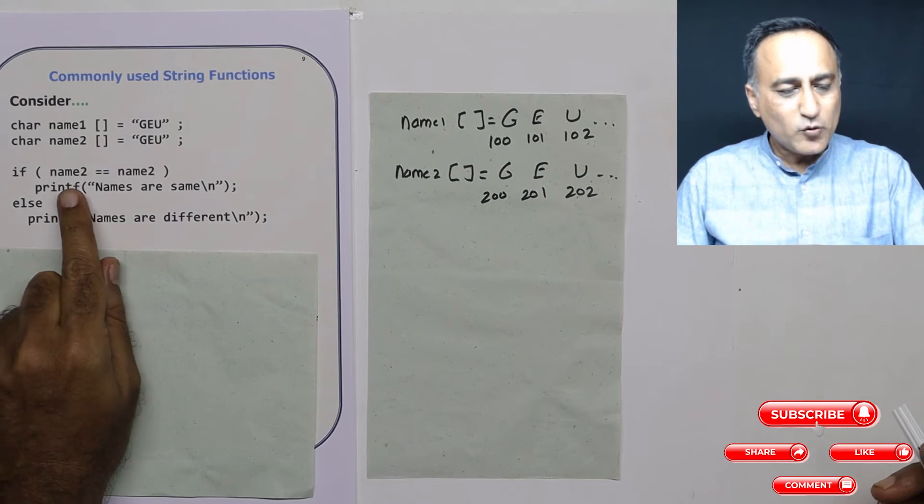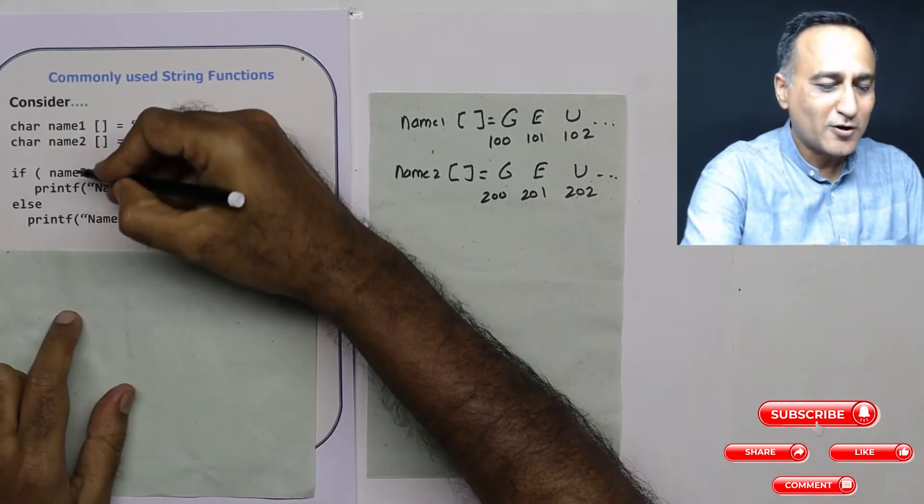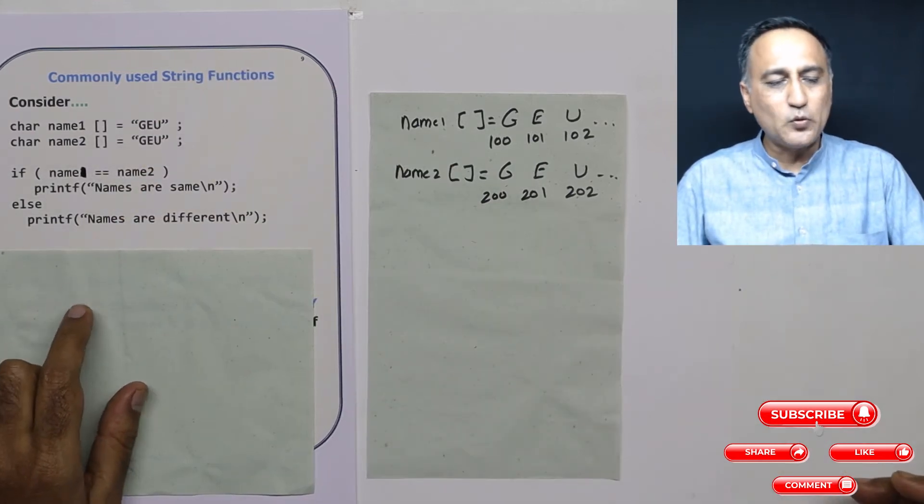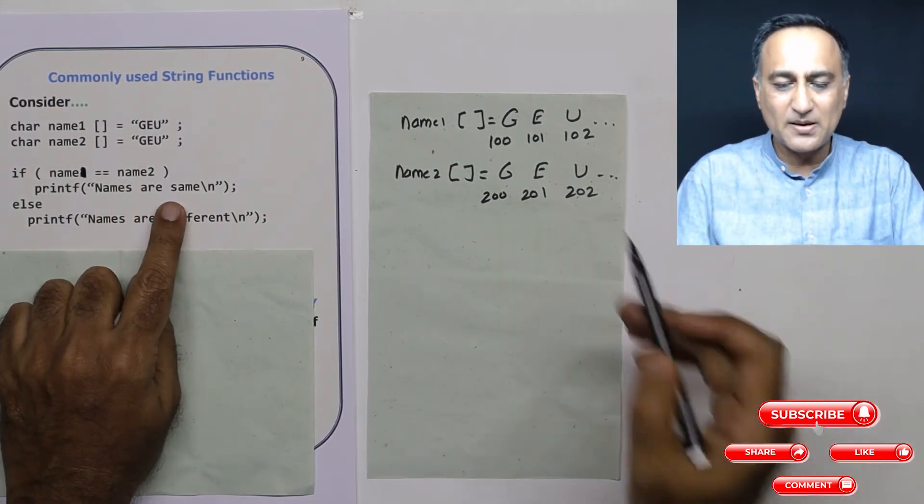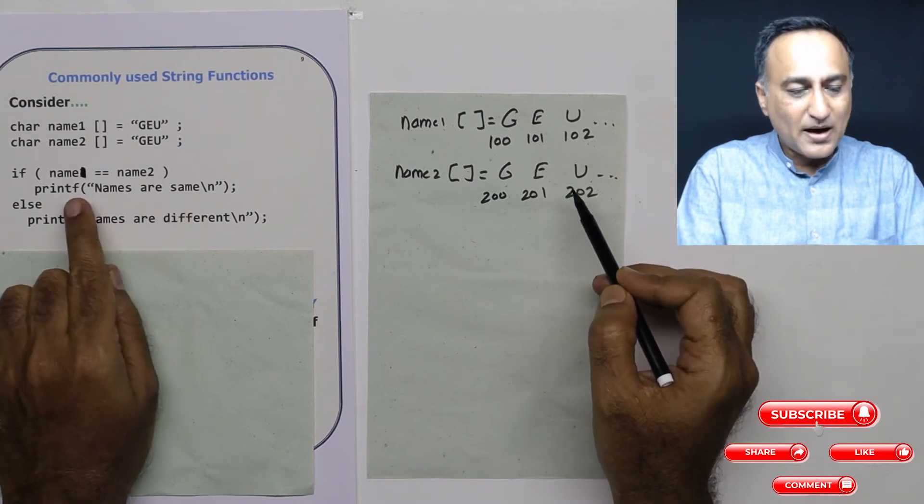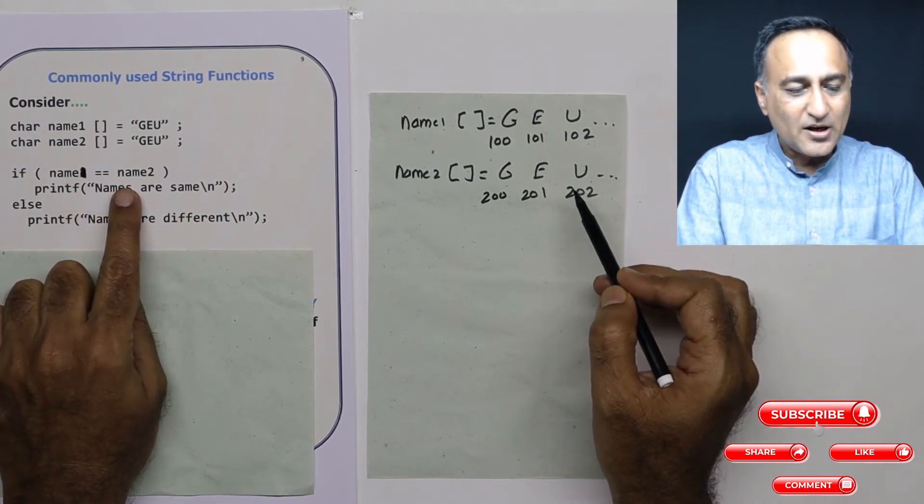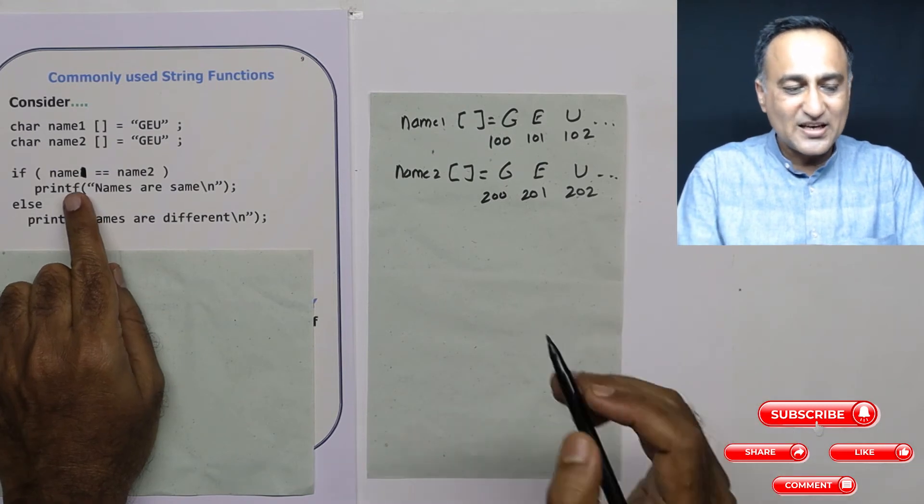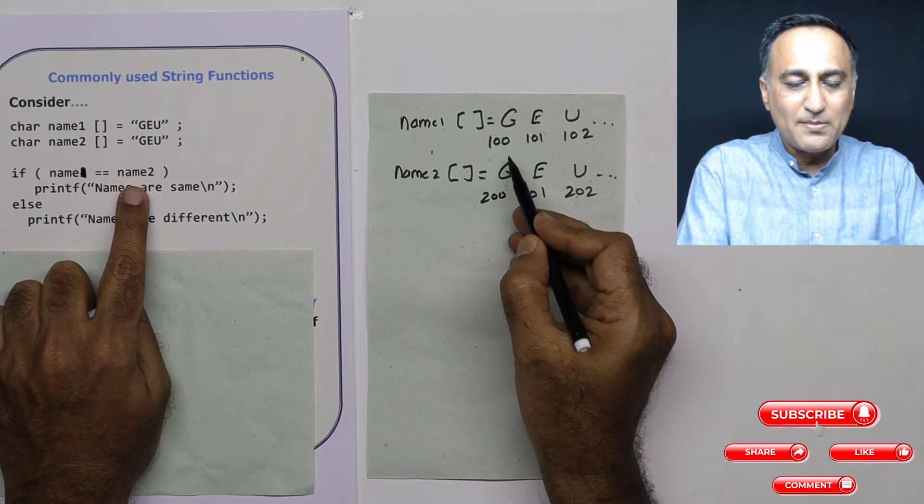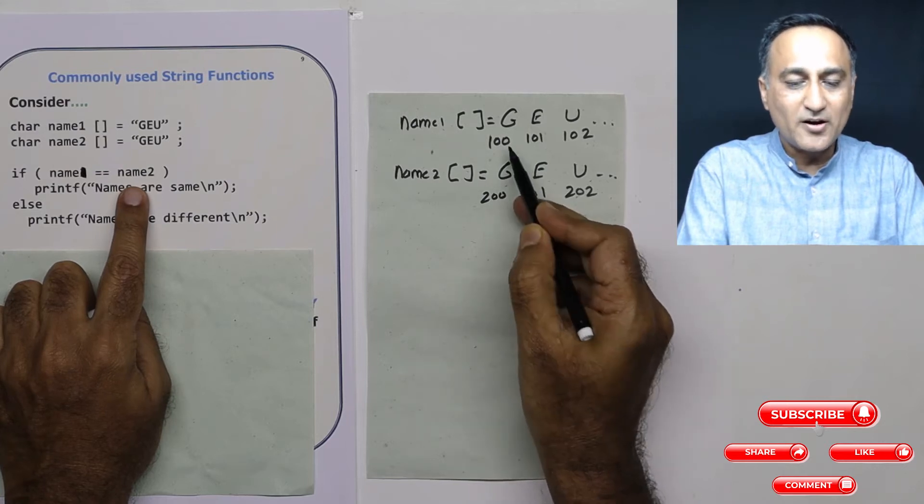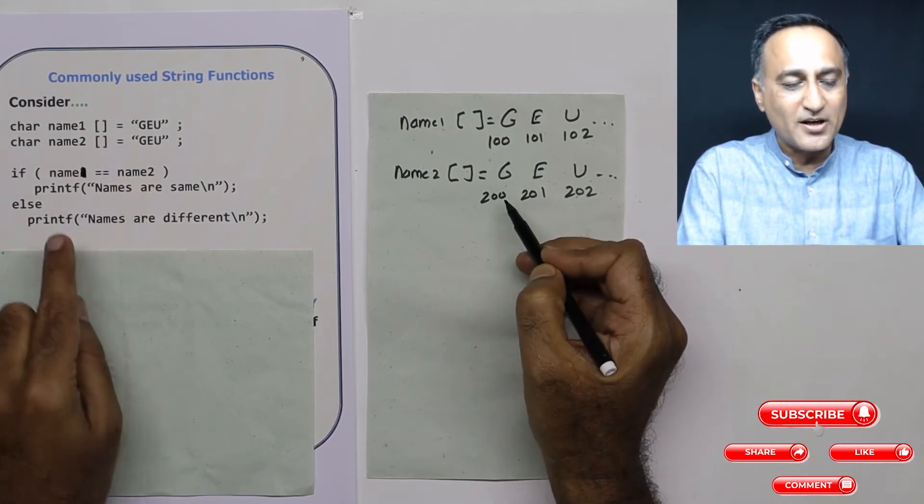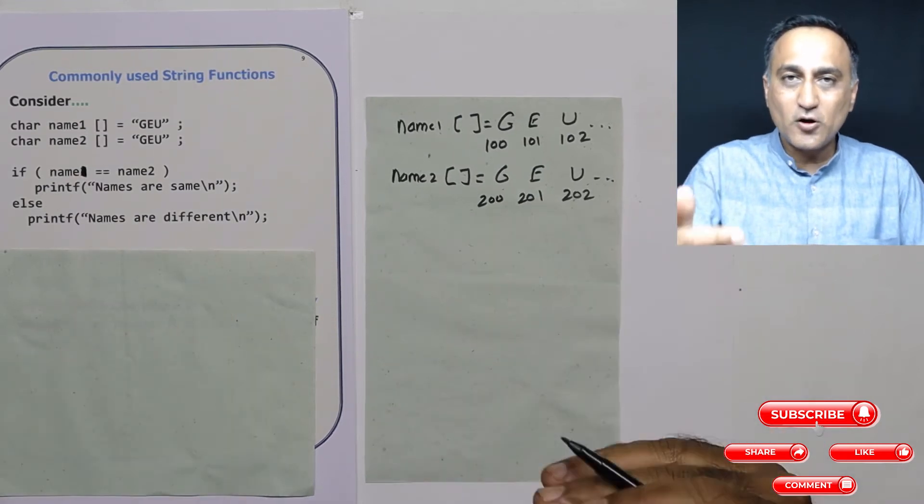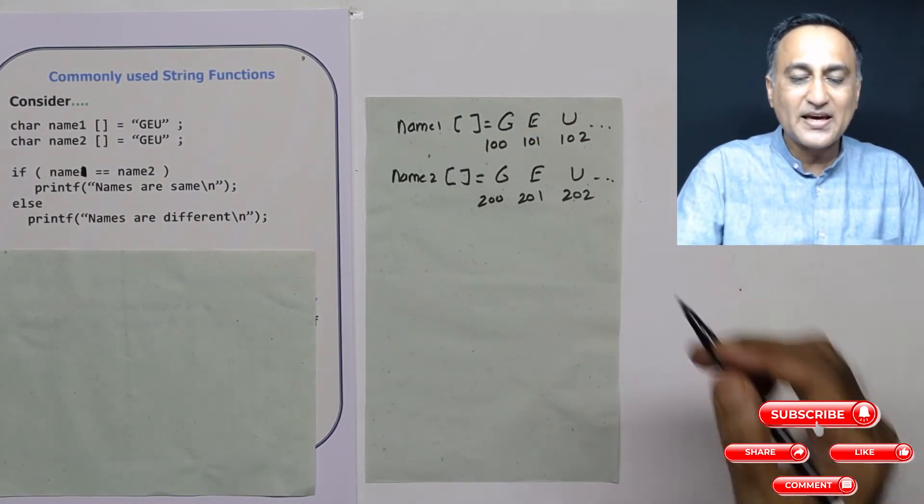But if I try to do if name1 is equal to name2, then print names are same. Although the names are same, what will happen is, the name of array is an address. So name1 will be replaced by 100, name2 will be replaced by 200. Now these two addresses are different. So it will print the message names are different. So you cannot compare an array simply by taking their name.